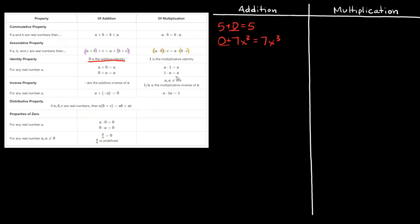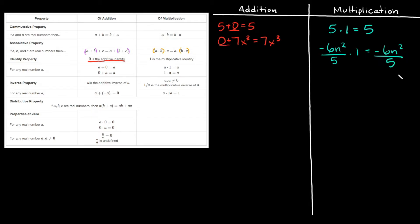The identity property of multiplication says when you have a number and you multiply it by 1, it doesn't change the answer — you still just have that number. So if you had 5 times 1, your answer would just be 5. Or if you had something like negative 6n squared over 5 and multiplied it by 1, it won't change your answer — you'll still have negative 6n squared over 5. That's why 1 is known as the multiplicative identity.